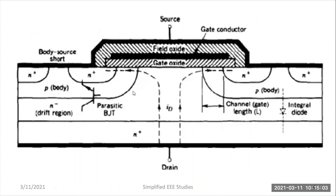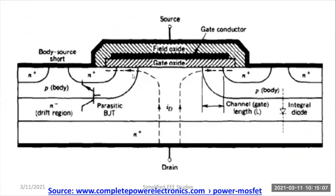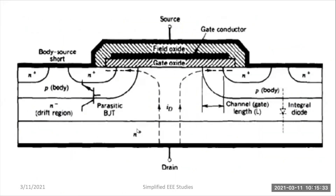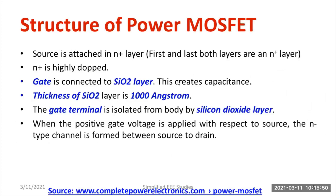These are the basic details about the structure of power MOSFET. To conclude: the device has N plus, P, N minus, and N plus layers. I explained the peculiarity of the body or P layer, the importance of the N minus drift layer — which is present only in power MOSFET and not in signal level MOSFET — and the N plus layer as a highly doped layer. Finally, I discussed the gate as a control terminal and how gate capacitance is formed. Overall, it has a vertical structure. In the upcoming video, I will explain the working of power MOSFET. Thank you very much for watching.